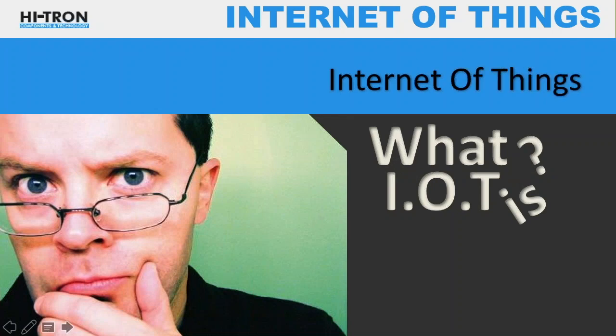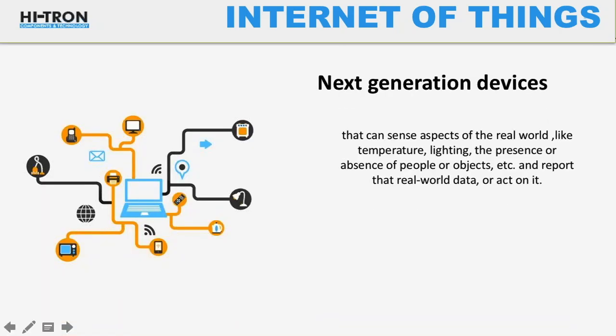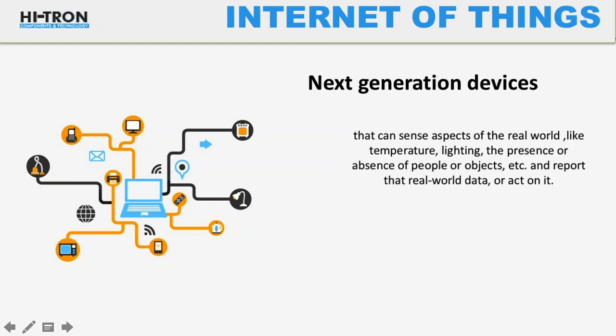In this slide, I'll tell you what exactly IoT is. The standard definition of IoT is: IoT is nothing but next-generation devices that can sense aspects of the real world like temperature, lightning, presence or absence of people or objects, and report that real-world data or act on it. You will get this fundamental definition everywhere, which is quite difficult to understand.